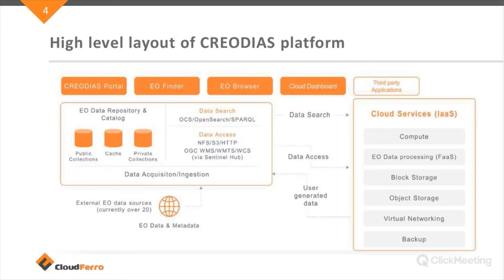Considering the technical aspects, the EO data is stored on big storage — now about 15 or 16 petabytes of data. We gather satellite data from various resources and store it on object storage. We also have a big cache, which is part of object storage for additional purposes. For products not existing on our platform, you can process them yourselves and they will be put on cache. When you register, you have your own domain and can store private collections.